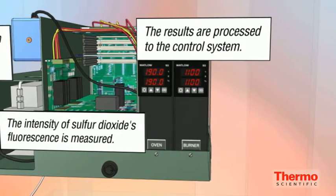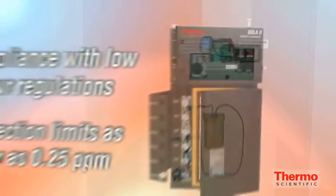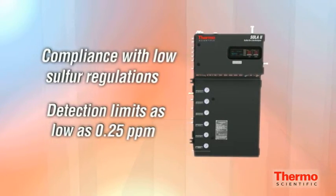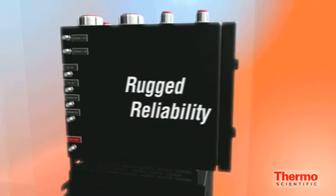The SOLA-2 is well positioned for all low sulfur fuel specifications. Detection limits as low as 0.25 parts per million sulfur are easily achieved.